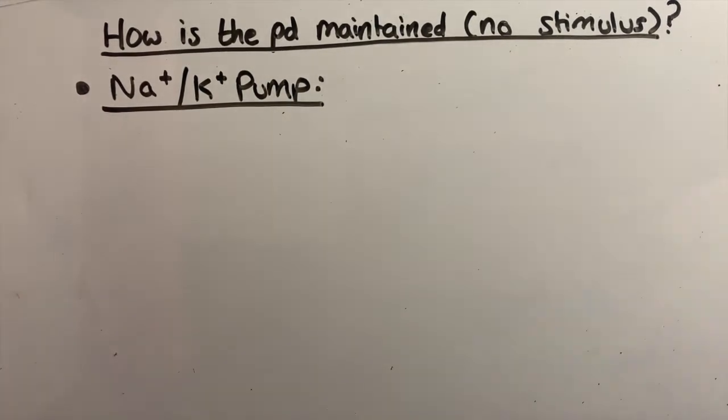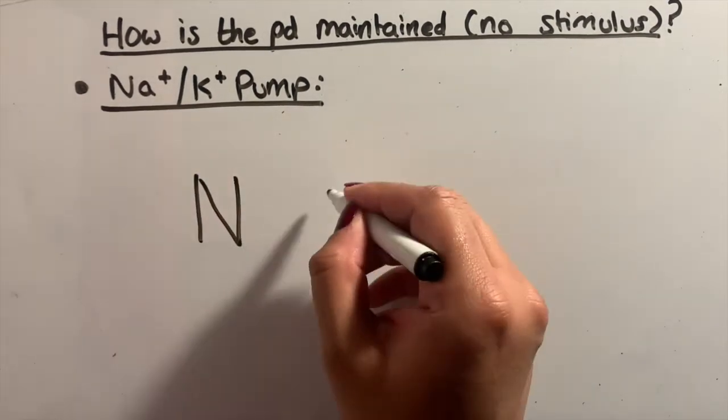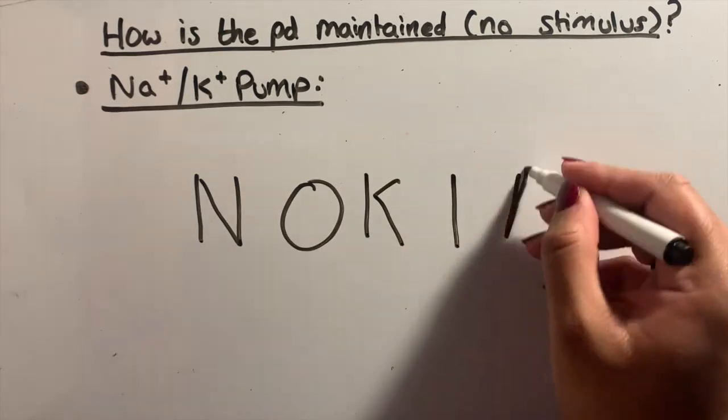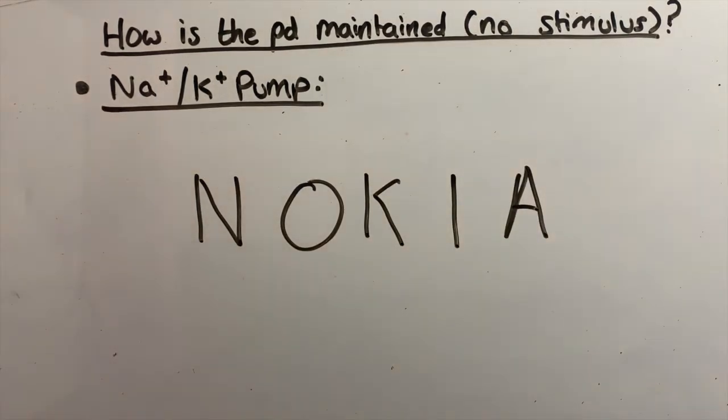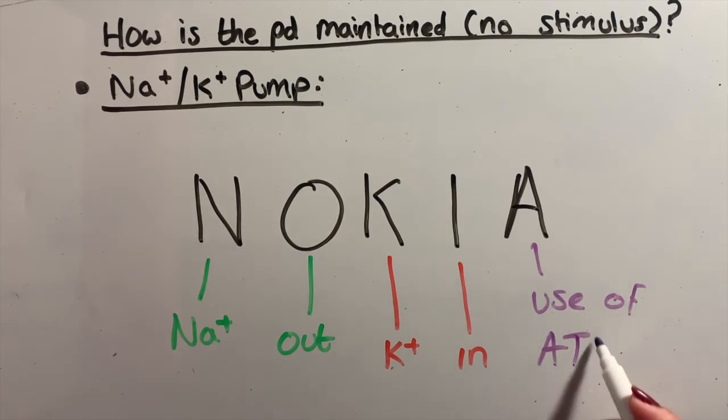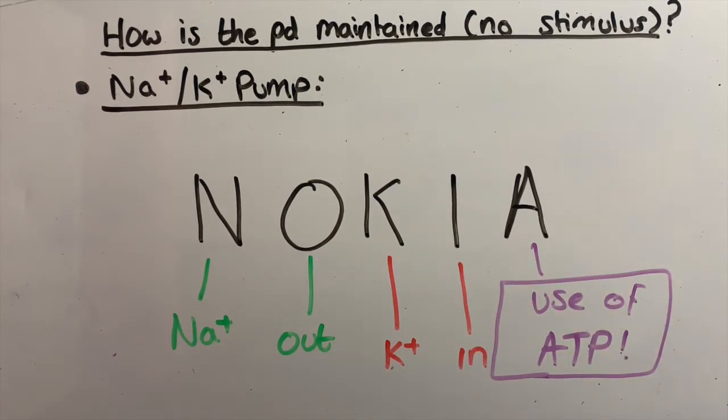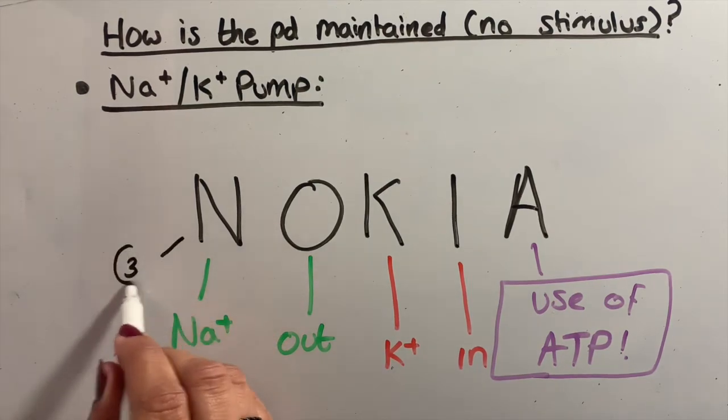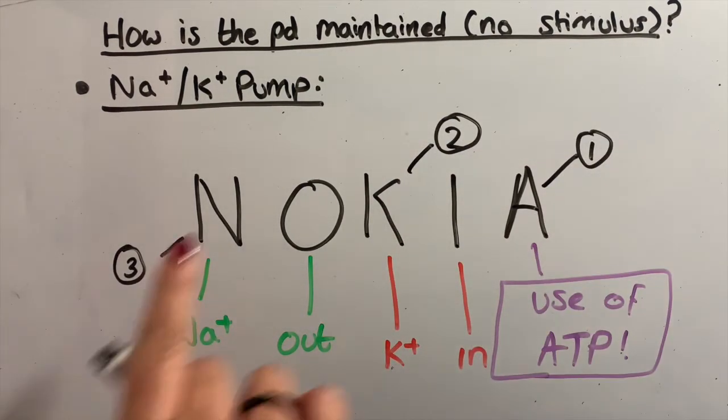So one way I've learned what the sodium-potassium pump does is via the word Nokia. The letters of Nokia stand for: N for sodium, O for out (sodium out), K for potassium, I for in (potassium in), and A for ATP. However, it's a bit confusing - how do we know whether it's three sodiums or two sodiums and vice versa? So here you just go three, two, one. You leave a space, so three sodiums, two potassiums, with the use of one ATP.